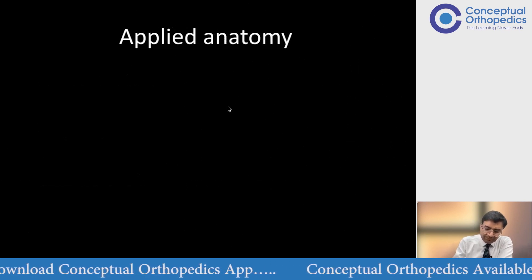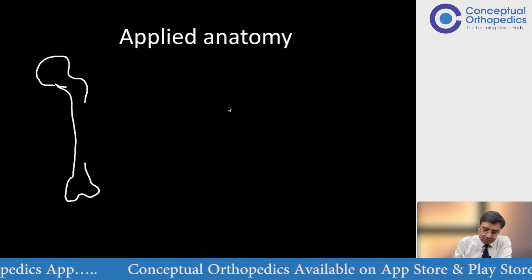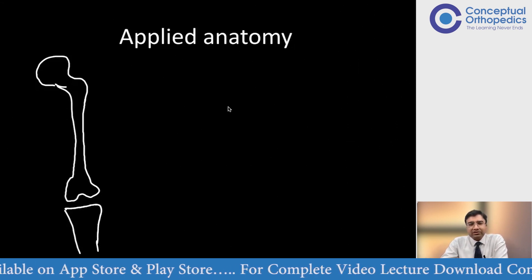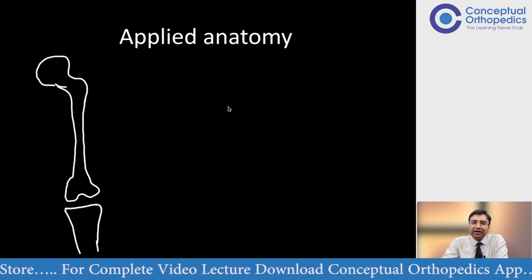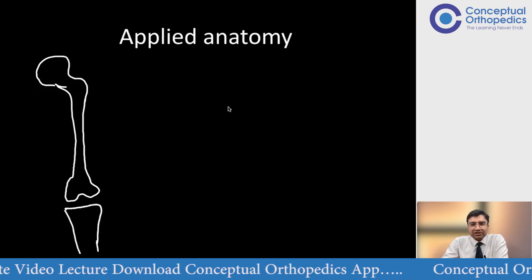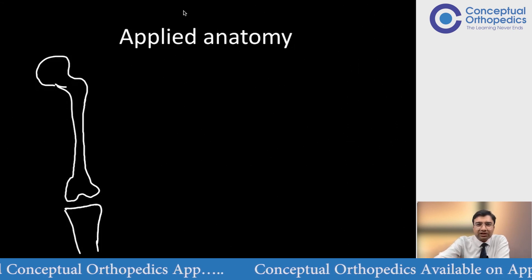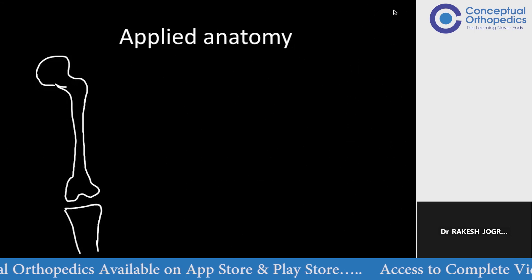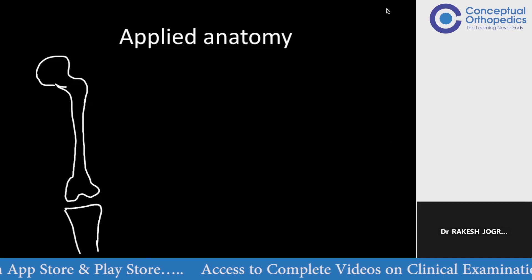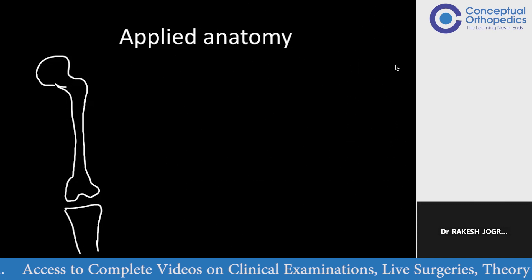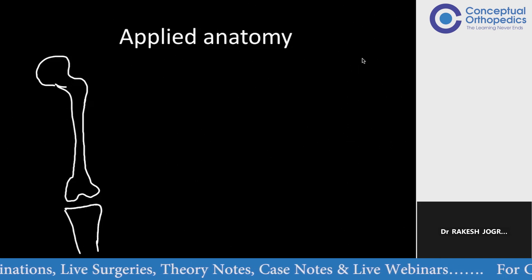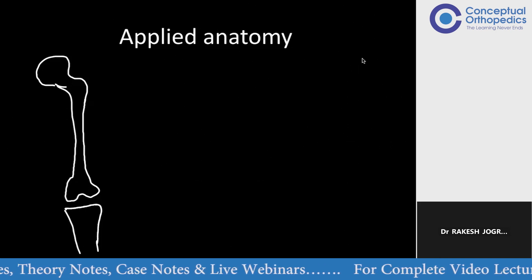Let us talk about distal femur anatomy. Here is the femur, the knee, and the proximal tibia. What are the important structures we have to think about around the knee joint? I need a volunteer — tell me the stabilizing structures in a knee. A participant named Rakesh responds: medial collateral ligaments, lateral collateral ligament, anterior extensor apparatus, patellar tendon, and ACL and PCL.